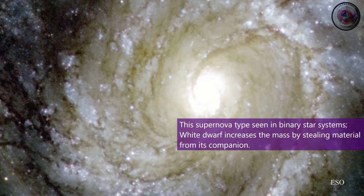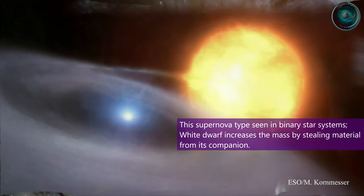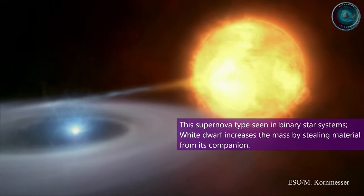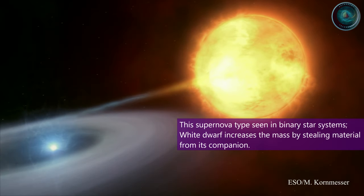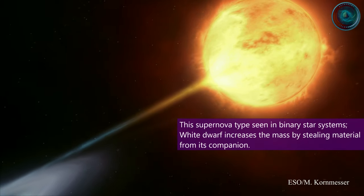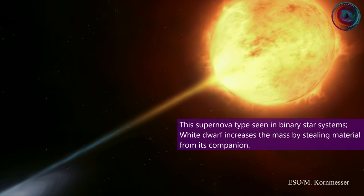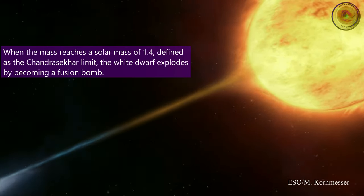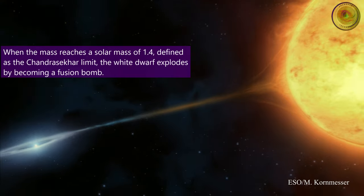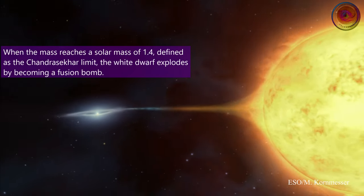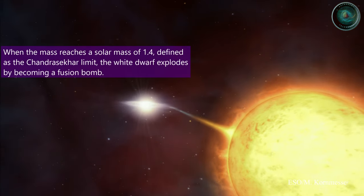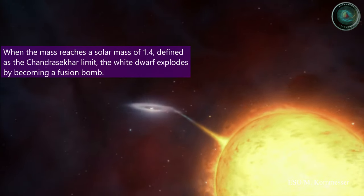This supernova type is seen in binary star systems. The white dwarf increases its mass by stealing material from its companion. When the mass reaches 1.4 solar masses, defined as the Chandrasekhar limit, the white dwarf explodes by becoming a fusion bomb.